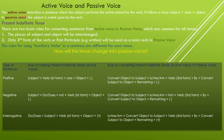The active voice describes the sentence where the subject performs the action stated by the verb. It follows a clear subject, verb, and object. The subject is active, or the subject performs the action of the verb — this is called active voice. But in passive voice, the subject is acted upon by the verb, which means the subject is no longer active.